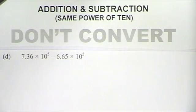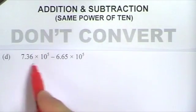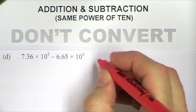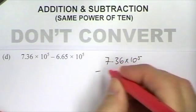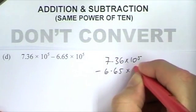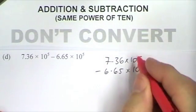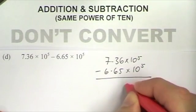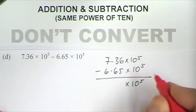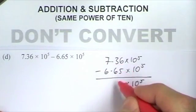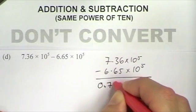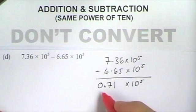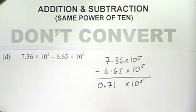This next question is a subtraction again, but this time the numbers are very close together. So if I perform the subtraction, it's 7.36 times 10 to the 5 take away 6.65 times 10 to the 5. Same powers of 10 — both 10 to the 5 — so my answer is going to be times 10 to the 5. But 7.36 take away 6.65 gives me 0.71 times 10 to the 5. Now 0.71 is not between 1 and 10, so it's not in standard form.